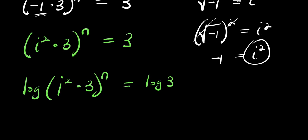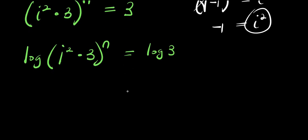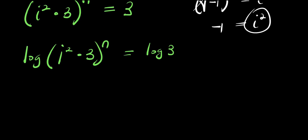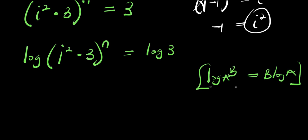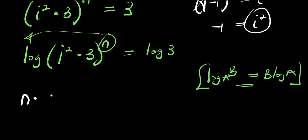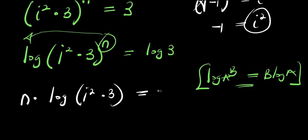Now what we are going to do is to apply the logarithm to both sides and use this property: if you have log of a to the power of b, this equals b times log a. So we apply this property — the n will come in front — and we are going to have n times log of i squared times 3, and this equals log 3.